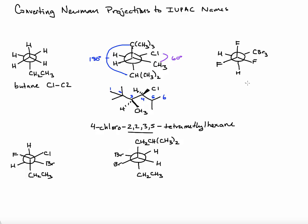Looking at the third example, the front carbon atom has three fluorine substituents. The rear carbon atom has two hydrogens and a methyl group bearing three bromines. Numbering the longest carbon chain gives us one, two, three carbon atoms, so the parent is propane, and we'll name the halogens as substituents.